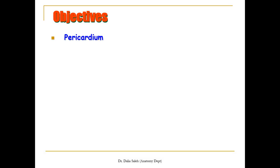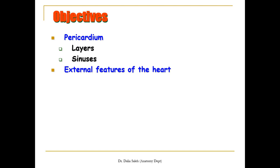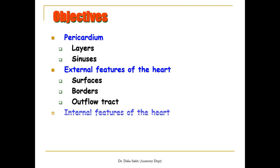The objectives of my presentation will be: first, I'm going to talk about the pericardium, its forming layers and its sinuses. Then I'll discuss the external features of the heart, its surfaces and borders, and the outflow tract of the heart which includes the aorta and the pulmonary trunk. Then I'll discuss the internal features of the heart — how the atria look from inside, and also the ventricles. And finally, the heart labs.